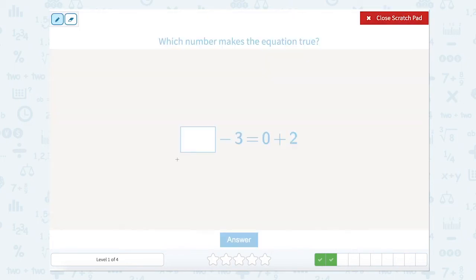Open up that scratch pad again. Remember that this side of the equal sign has to equal this side of the equal sign. So let's solve for the part that has the two pieces. 0 plus 2 equals 2. So 2 equals something minus 3. So something minus 3 equals 2. I can add 3 more to 2 to figure out that number. So 3 plus 2 is 5. So 5 minus 3 equals 2.